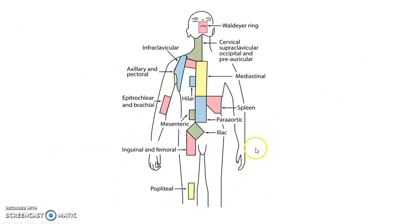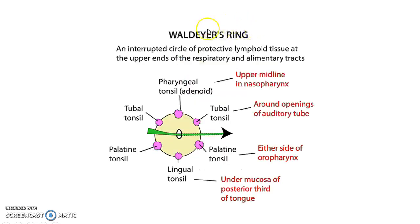This picture shows the various regional lymphatics in the body, and this depicts Waldeyer's ring. It is an interrupted circle of protective lymphoid tissue at the upper ends of the respiratory and alimentary tracts.